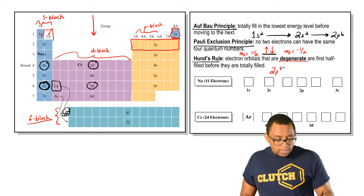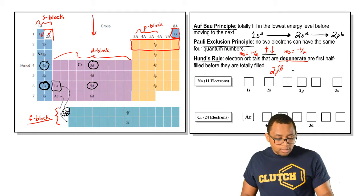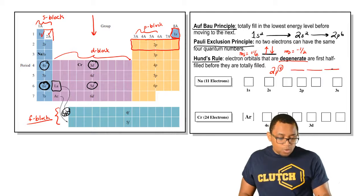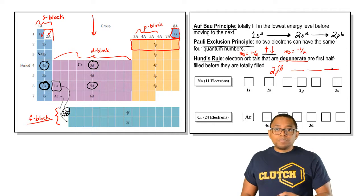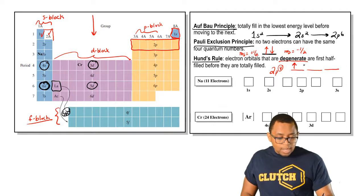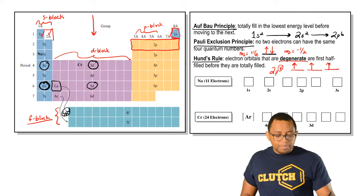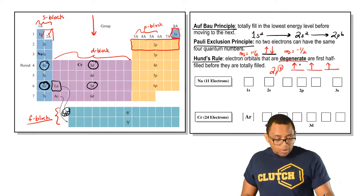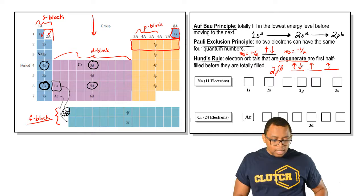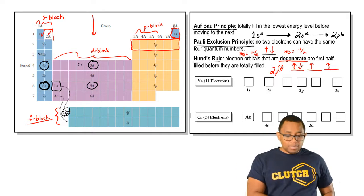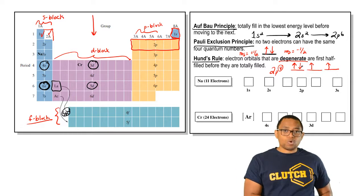If you had 2P4, that would mean that you have four electrons. P has three orbitals. Since they're all 2P, you'd half fill first. Up, up, up, and that fourth electron would have to come down. Knowing this will help us determine the electron configuration of sodium and chromium.